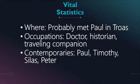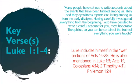Vital statistics: he probably met Paul in Troas. Occupations: doctor, historian, traveling companion. Contemporaries: Paul, Timothy, Silas, and Peter. Key verses: Luke chapter 1 verses 1 through 4 — 'Many people have set out to write accounts about the events that have been fulfilled among us, using eyewitness reports from the early disciples. Having carefully investigated everything from the beginning, I also have decided to write a careful account for you, most honorable Theophilus, so you can be certain of the truth of everything you were taught.' Luke includes himself in the 'we' sections of Acts chapters 16 through 28, and is also mentioned in Luke 1:3, Acts 1:1, Colossians 4:14, 2 Timothy 4:11, and Philemon 1:24 — but he never mentions his own name.